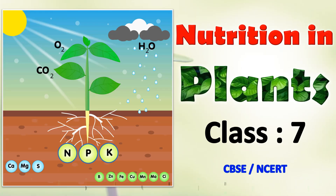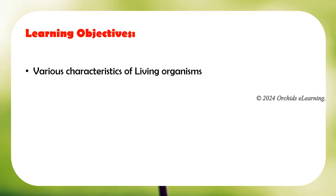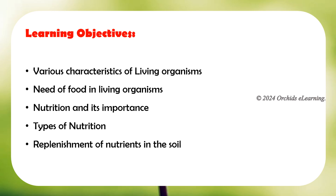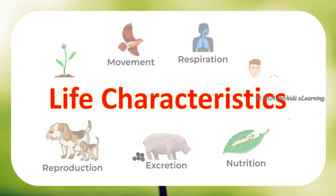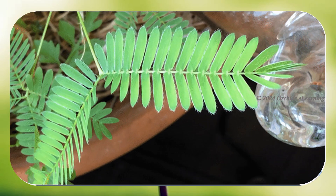Nutrition in Plants, Class 7 Science. Learning objectives: recall various characteristics of living organisms, understand the need for food in living organisms. You have already learned in previous sessions that living organisms have some basic characteristics that differentiate them from non-living things. These characteristics are called life characteristics. Some of them are food, respiration, growth, and response to stimuli.